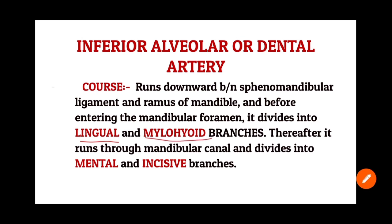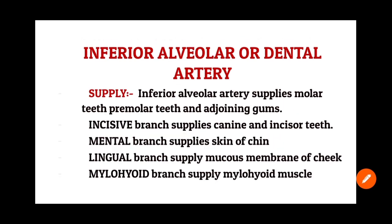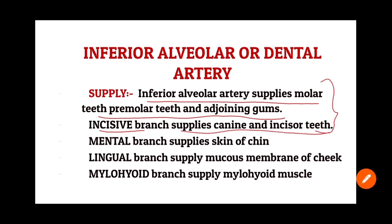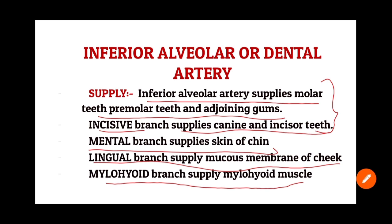The inferior alveolar artery supplies the molar teeth, premolar teeth, and adjoining gums. The incisive branch supplies the canine and incisor teeth, covering almost all teeth in the mandible. The mental branch supplies the skin of the chin, the lingual branch supplies the mucous membrane of the cheek, and the mylohyoid branch supplies the mylohyoid muscle.